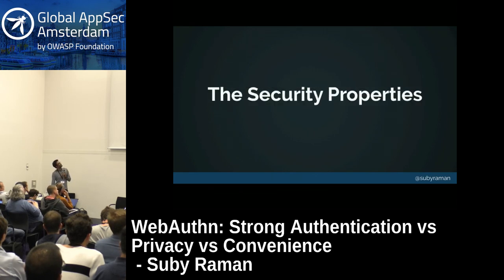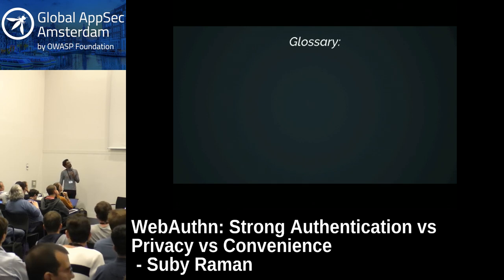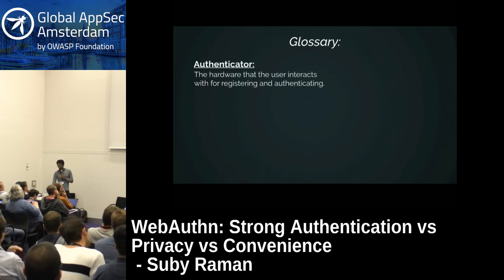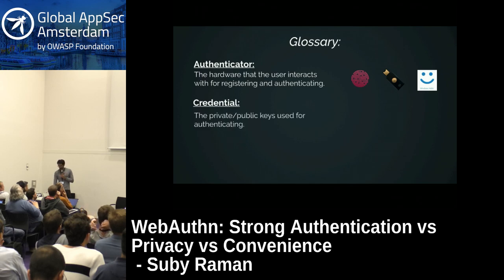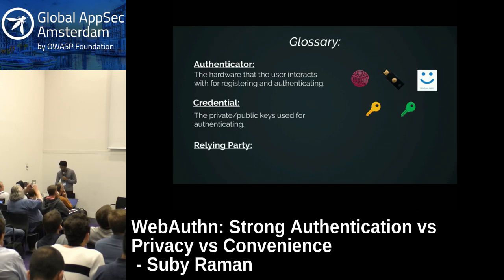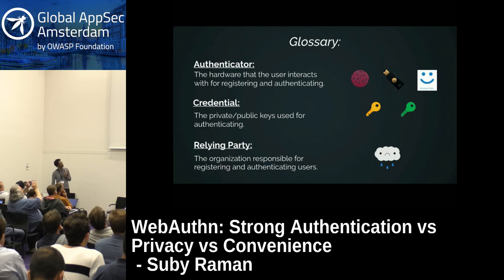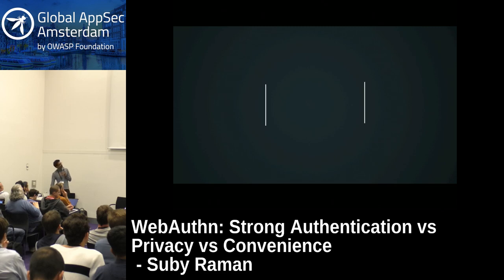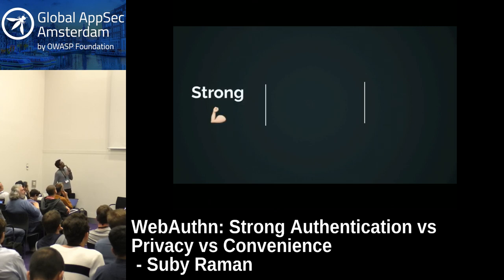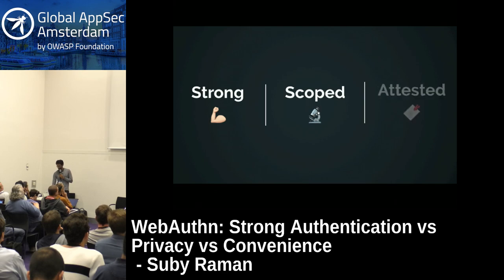I will go over the security properties of WebAuthn. As a general glossary: an authenticator is the hardware the user interacts with for registering and authenticating. The credential refers to the private-public key pair used for authenticating. The relying party is the entity responsible for registering and authenticating users — if you're an application developer, you are the relying party. At a high level, WebAuthn can be described with three characteristics: strong, scoped, and attested.